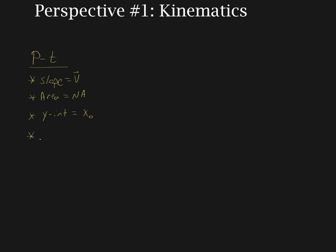Looking at the shape of the position-time graph: if it's a horizontal line, there's no motion; if it's a curved line, there's an acceleration. Then we looked at the velocity-time graph. The slope was equal to the acceleration, and the area was equal to the displacement — delta x, which we sometimes write as d. Remember, if the initial position is not given, it's not possible to completely draw your position-time graph.